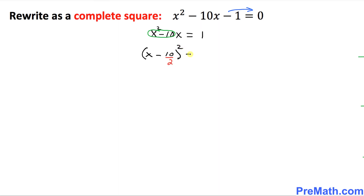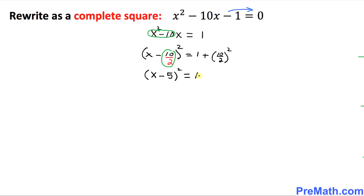On the right hand side we got 1. And then for this part — the fraction — I am going to write down plus 10 over 2, squared. These are the basic tricks you have to be careful about. So on the left hand side it simply becomes x minus 5 squared, equals 1 plus 5 squared. Thus we got x minus 5 squared equals 1 plus 5 squared.